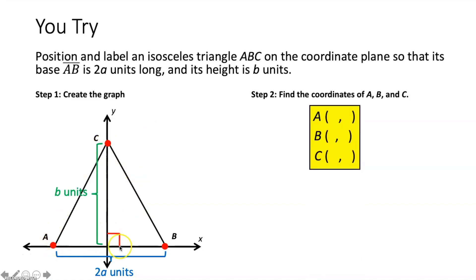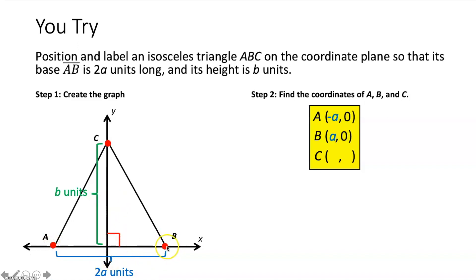This isosceles triangle straddles the Y axis, so the Y axis cuts it in half. Since segment AB is two A units long, each half is A units. Point A is on the negative side, so its coordinates are negative A comma zero. Point B is on the positive side at positive A comma zero — each has a Y coordinate of zero since they're on the X axis. Point C is on the Y axis, so its X coordinate is zero and it goes up B units, making C at zero comma B.